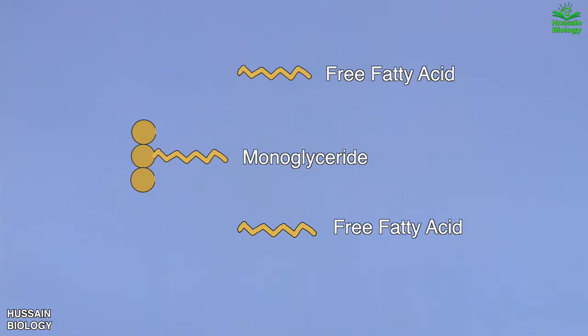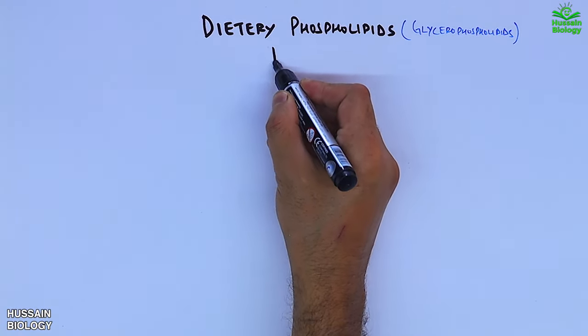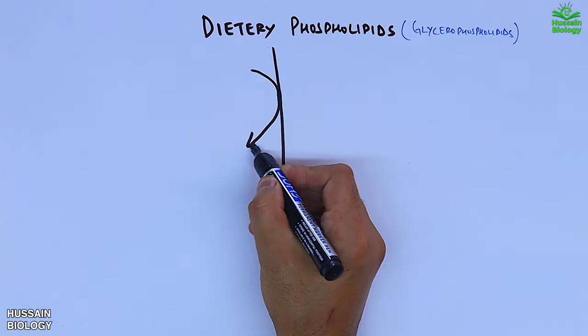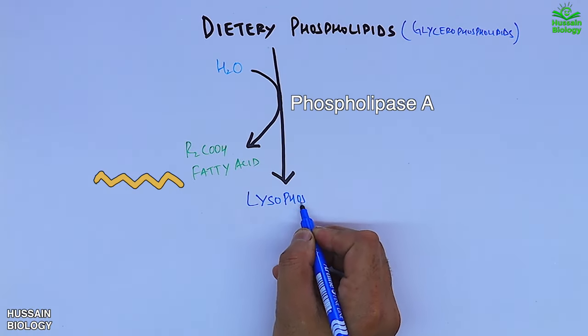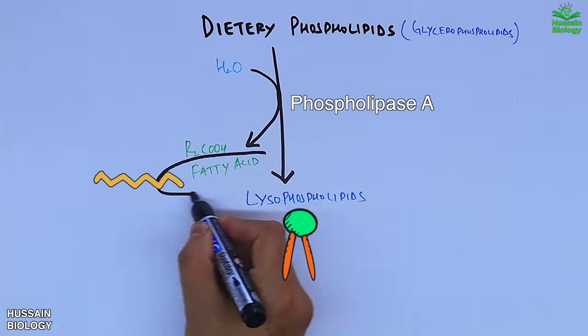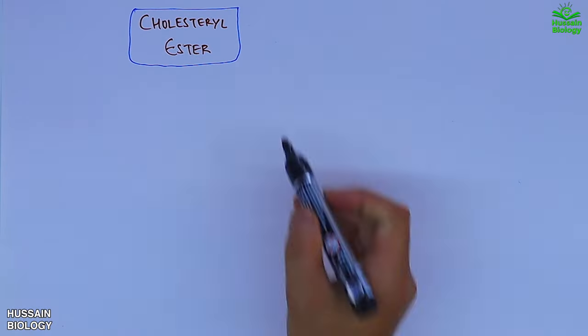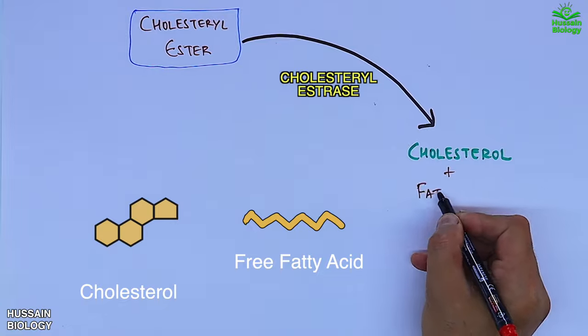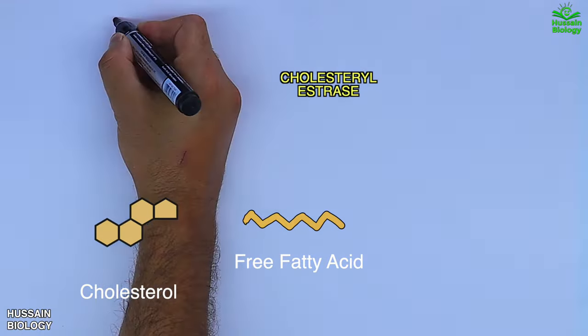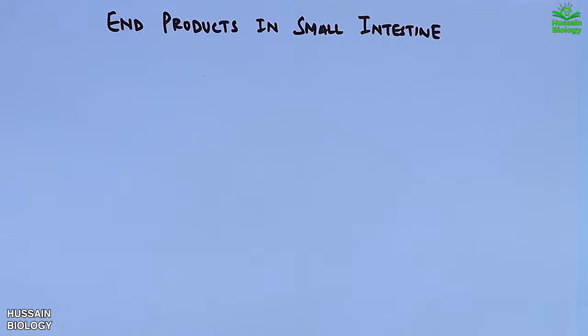Setting aside those fatty acids and monoglycerides, we now look at dietary phospholipids, which are acted upon by phospholipase A in the presence of water, yielding free fatty acids and lysophospholipids. Fats in the form of cholesterol esters are acted upon by cholesterol esterase enzyme, giving cholesterol and fatty acids.